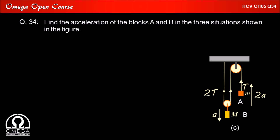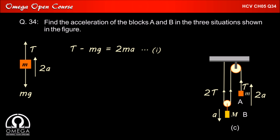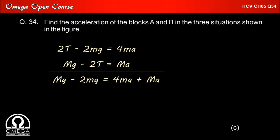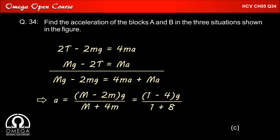In part C of the problem, the relation of tension and acceleration remains the same as in the previous two parts. In the free body diagram of A, tension T acts in the upward direction, gravity Mg in the downward direction, and acceleration 2A in the upward direction. The equation is T minus Mg equals 2MA. For block B, gravity is capital Mg downward, tension 2T upward, and acceleration A downward, giving capital Mg minus 2T equals capital MA. Multiplying equation 1 by 2 and adding equation 2, we get A equal to (capital M minus 2M) times G divided by (capital M plus 4M). With capital M equal to 1 kg and M equal to 2 kg, we get acceleration as minus G by 3.